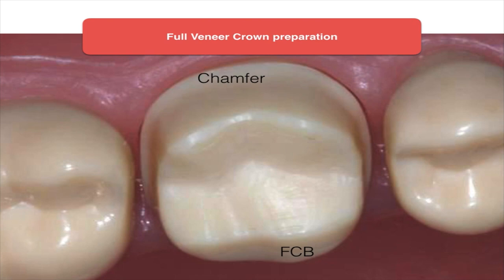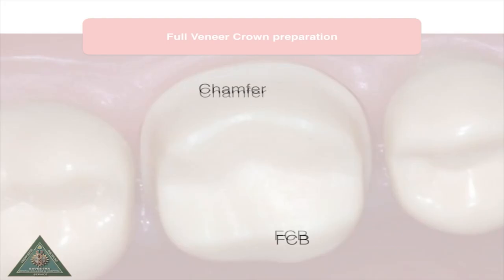A final finished preparation will have a smooth chamfer margin, very parallel axial walls, and a nice functional cusp bevel. In this case it is an upper, so the functional cusp is palatal. The non-functional cusp bevel is very thin. You can also see the corrugated surface of the occlusal surface where the basic cuspal shape is maintained, but without any of the fine grooves in the cusp.